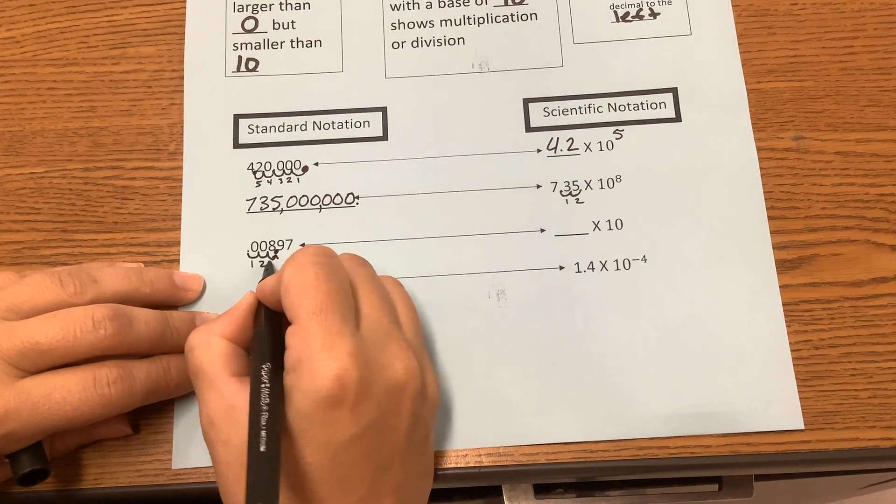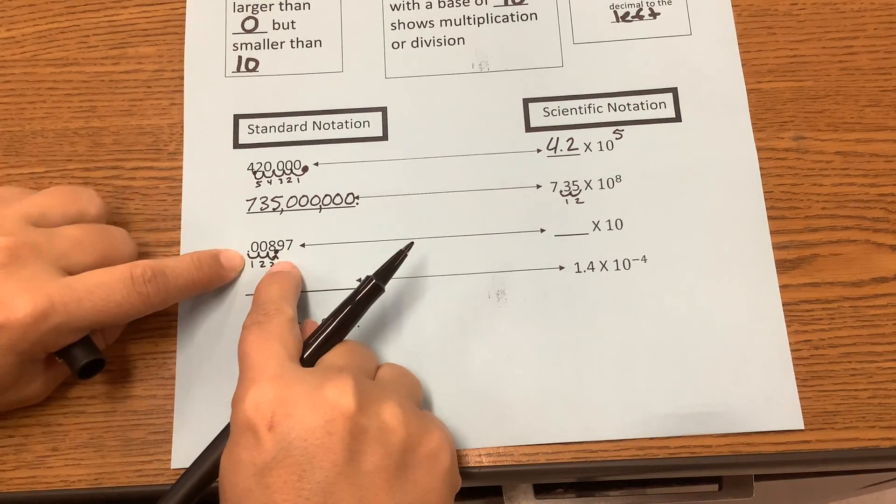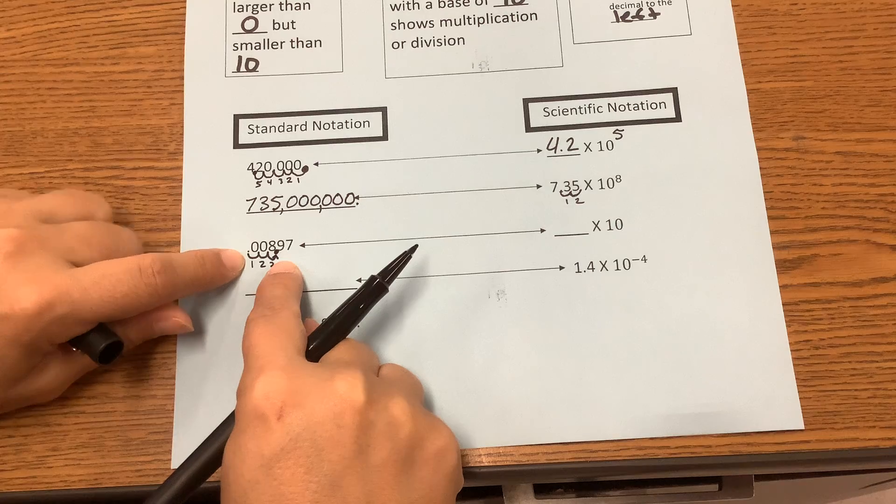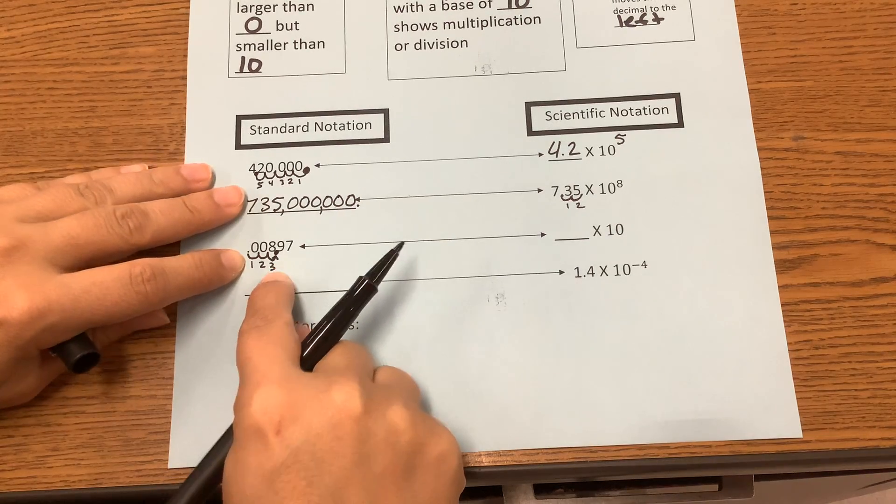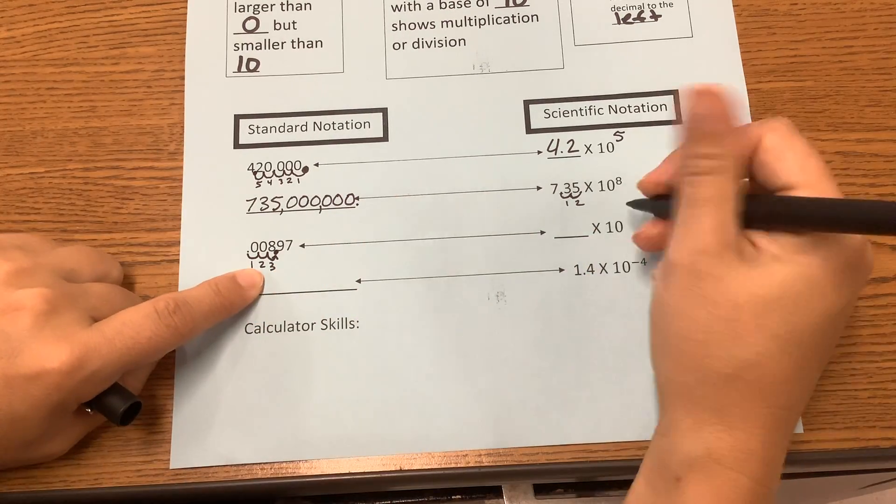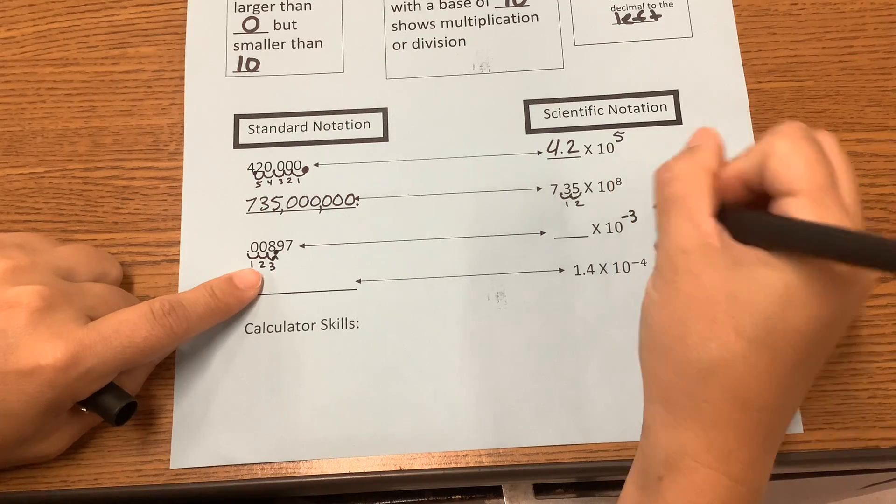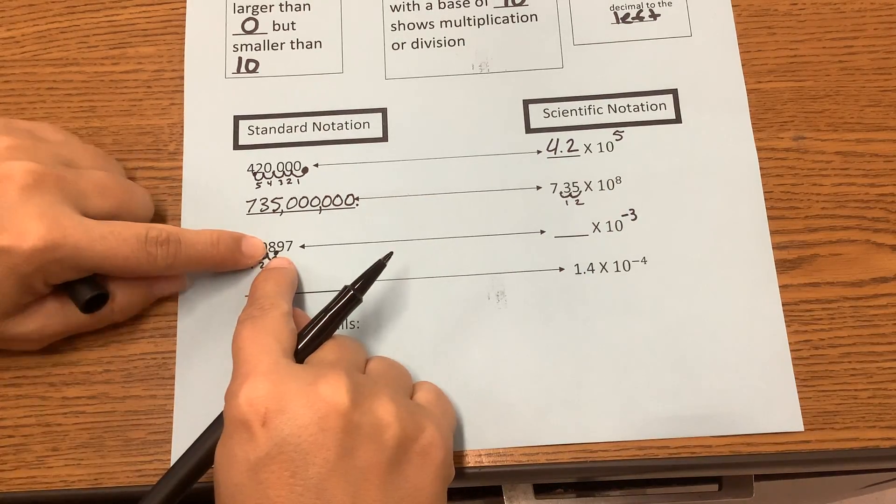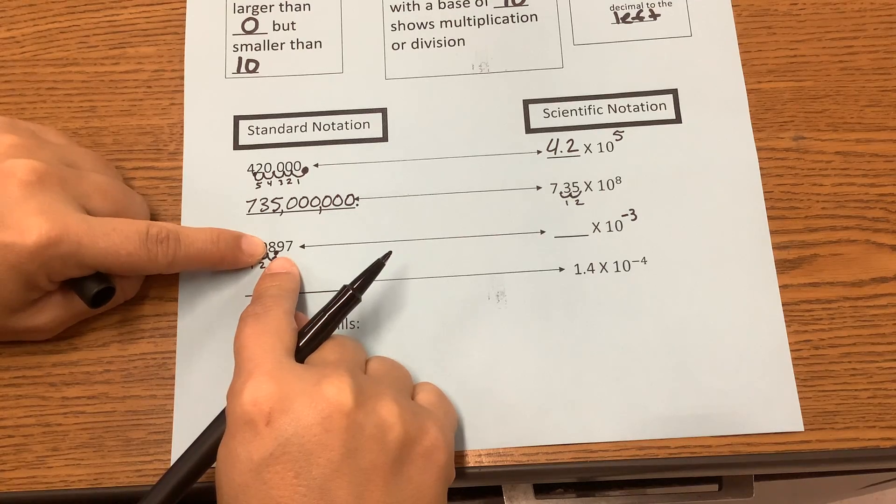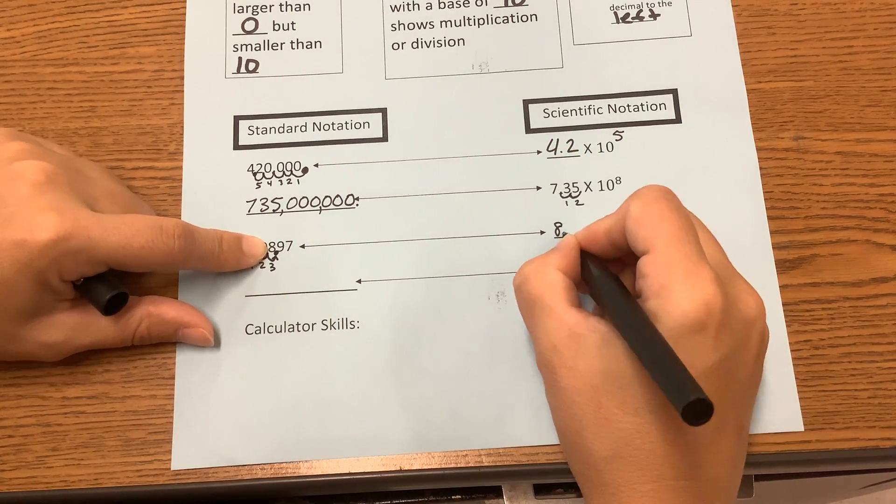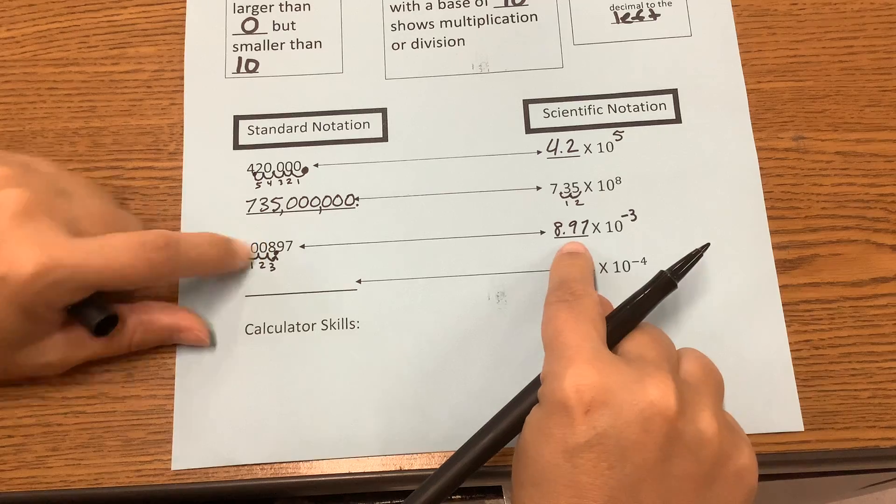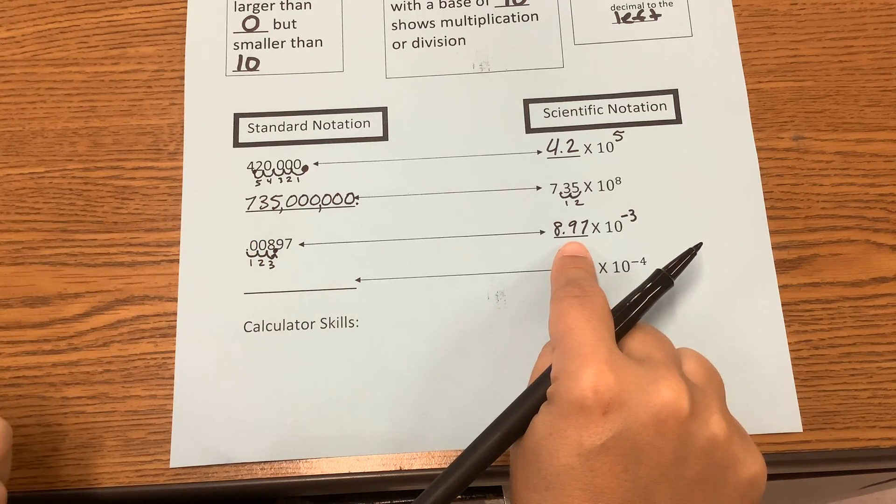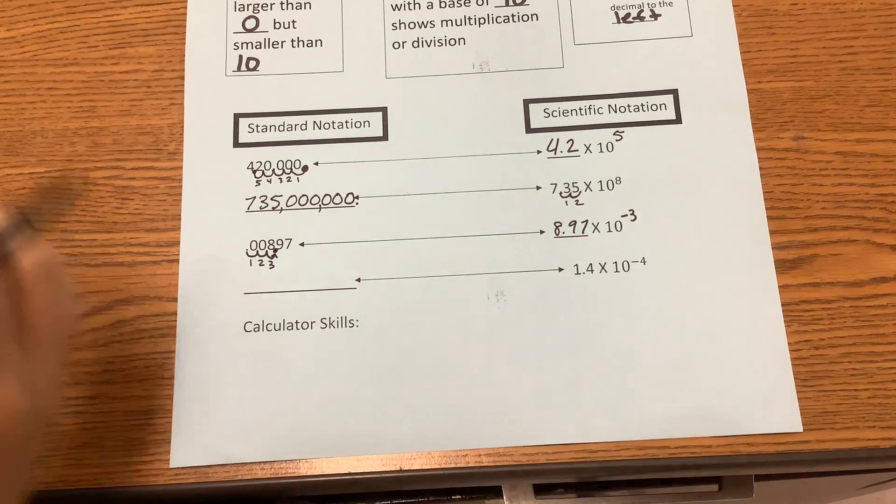We're moving it 3 places. But notice that it's a small number, and small numbers are represented by negative exponents. So instead of positive 3, we're going to show that we're going to have to move it back 3. And what is our new number that's going in our whole values place? 8.97. And that's because it has to be between 1 and 10.